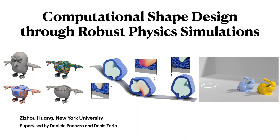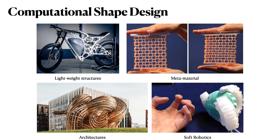Hi, my name is Zizhou Huang. I'm a PhD student from New York University, advised by Daniele Panozzo and Dennis Zorin. My thesis is titled Computational Shape Design through Robust Physics Simulations.